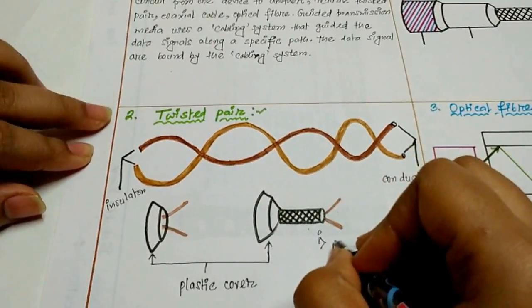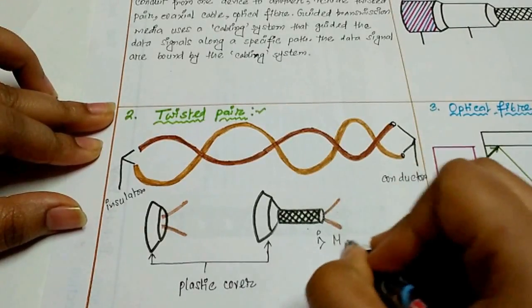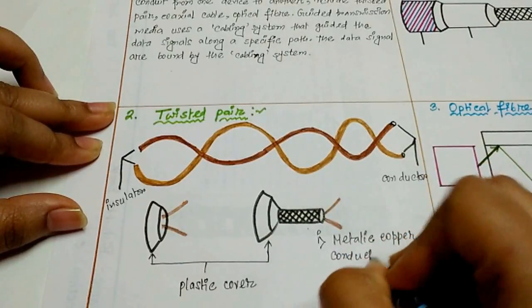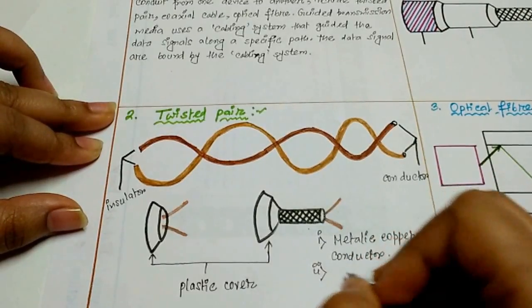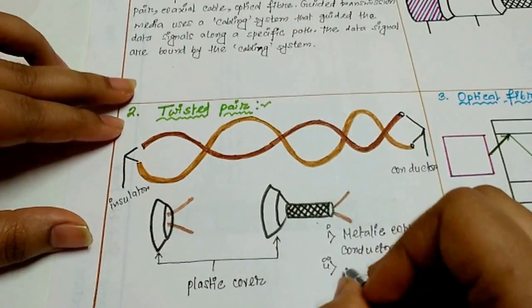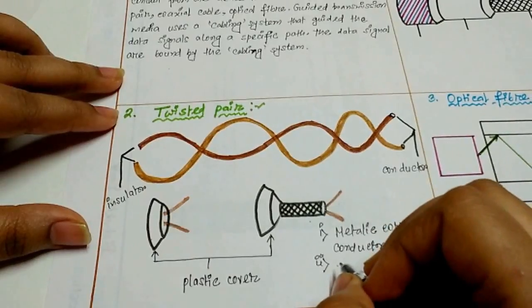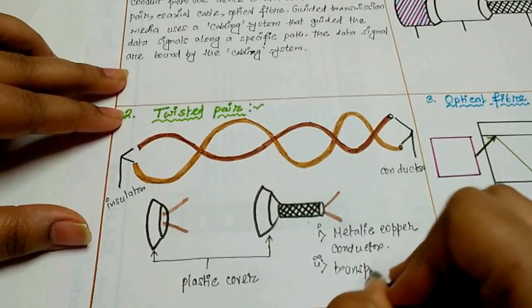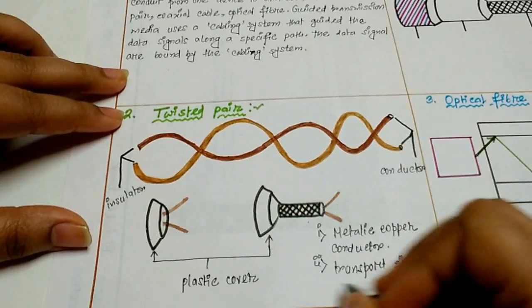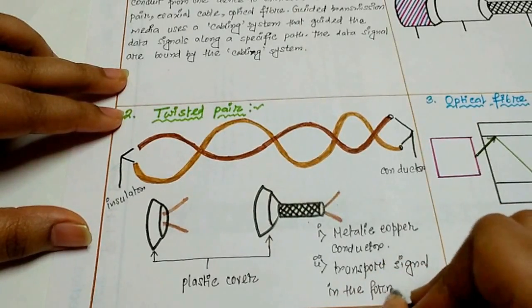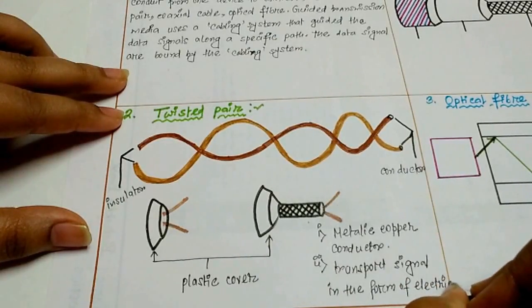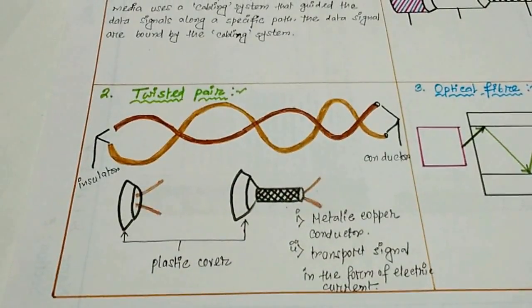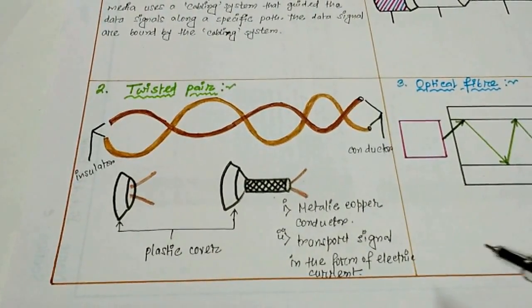It is a metallic copper conductor. Signals flow in the form of electric current. It is the basic structure of twisted pair.